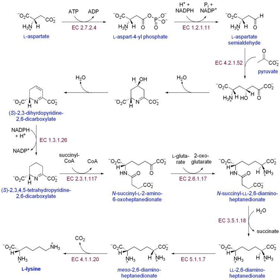Coenzymes or cofactors are molecules that assist in chemical reactions. These may be metal ions, vitamin derivatives such as NADH and acetyl-CoA, or non-vitamin derivatives such as ATP. In the case of NADH, the molecule transfers a hydrogen, whereas acetyl-CoA transfers an acetyl group, and ATP transfers a phosphate.